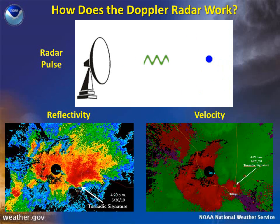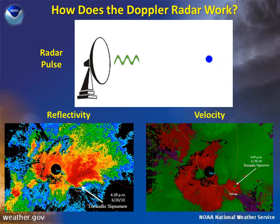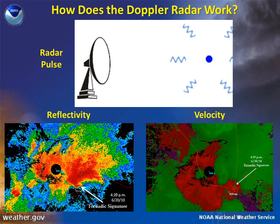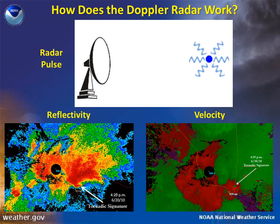This process is illustrated in the animation. The signal produced by the object is then sent to the signal processor where it is turned into usable data, called base data, which we see as reflectivity and velocity.